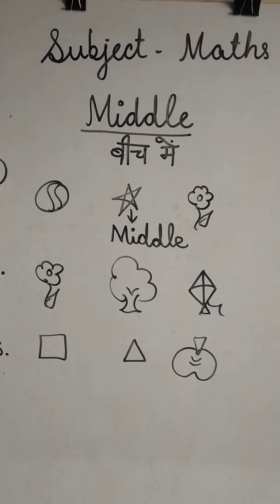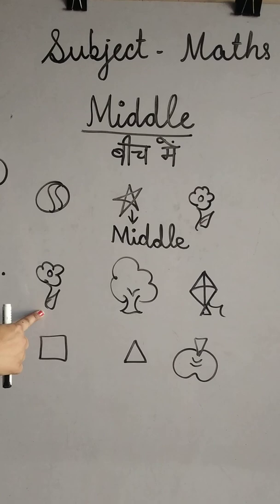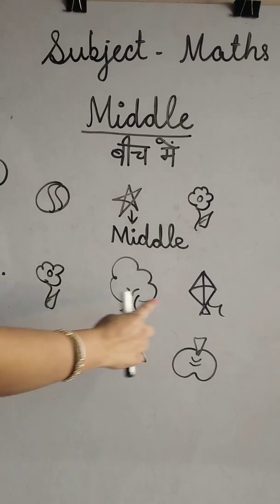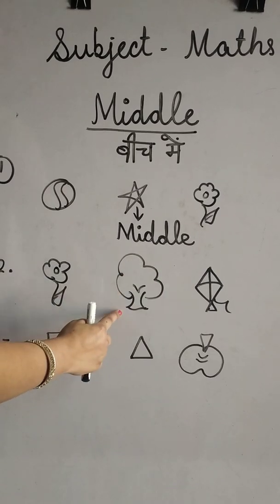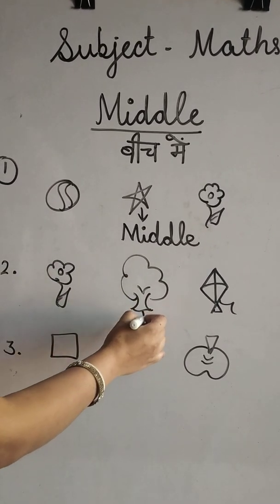Now, number two. The flower is on left side. The kite is on right side. And the tree is in middle.